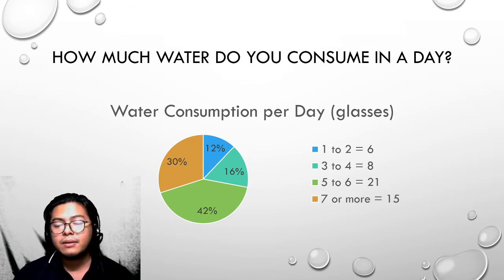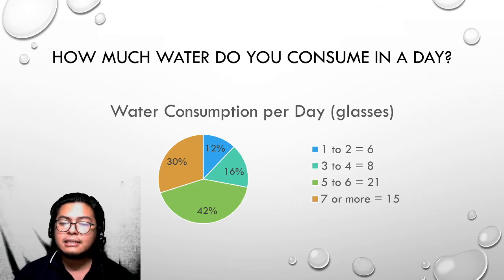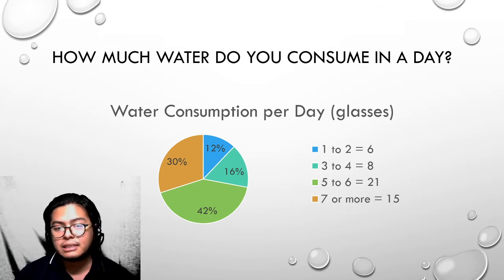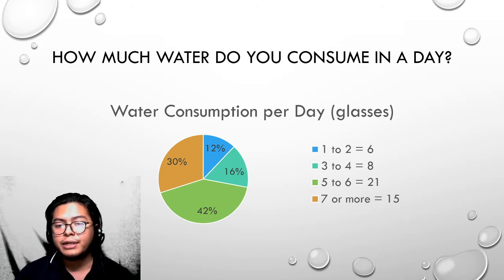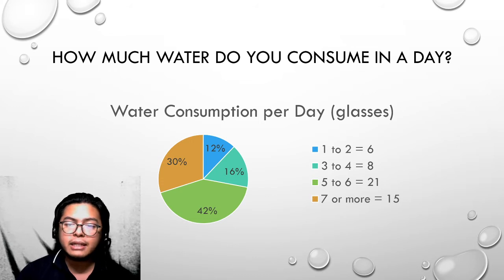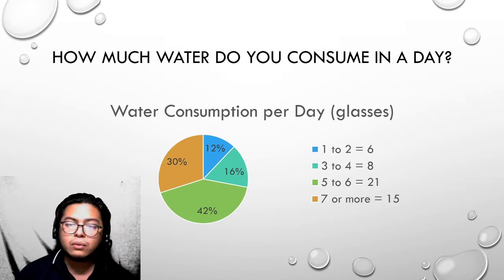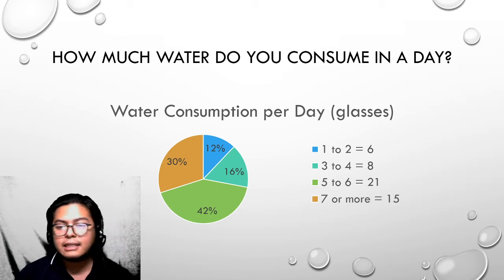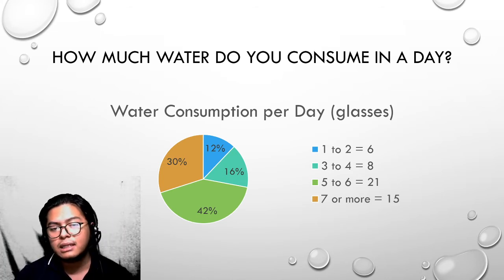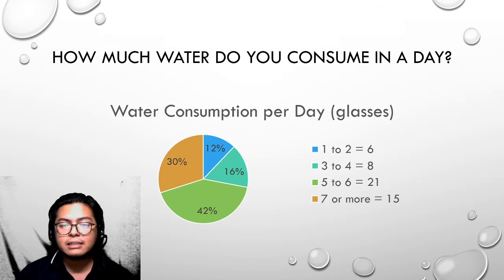The choice with the most number of votes is letter C — it has 21 votes, which is 42% of the pie chart. And the choice with the least number of votes is letter A, one to two glasses per day — it has six votes and is only 12% of the pie chart.